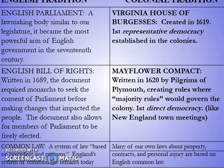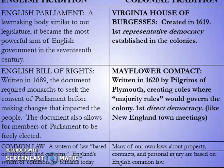We also have common law, which is a system based on tradition, custom, and precedent. That actually applies to a lot of our laws in not only colonial America, but also today — about property, contracts, and personal injury laws, which are based on English common law as well. So you have similar traditions going from England to colonial America that actually exist even today.